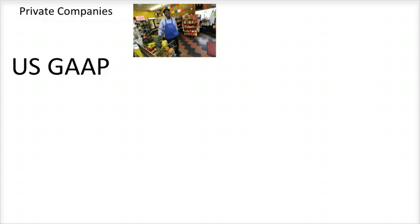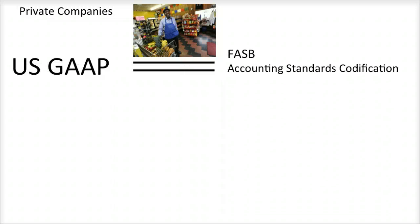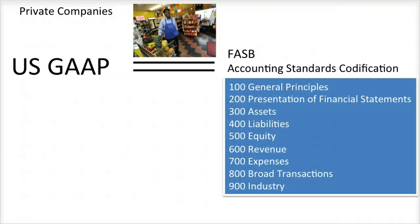The most recent iteration of US GAAP for private companies is the FASB Accounting Standards Codification, issued in July 2009. In it, all previously issued accounting standards have been consolidated and organized by topic into one set of standards using standard code numbers.